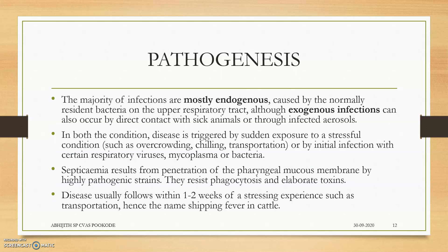The majority of infections are mostly endogenous: the organisms colonize the nasal or nasopharyngeal region, and whenever the animal is sick or in poor general condition, the bacteria may proliferate, produce more toxins, and produce septicemia. Septicemia results from the penetration of the pharyngeal mucous membrane by highly pathogenic strains. The presence of toxins or virulence factors of bacteria in the blood is known as septicemia. These bacteria resist phagocytosis, with phagocytosis resistance being due to the toxins present in them.